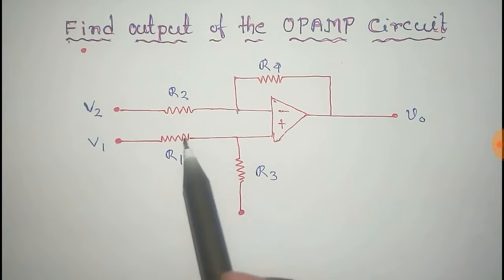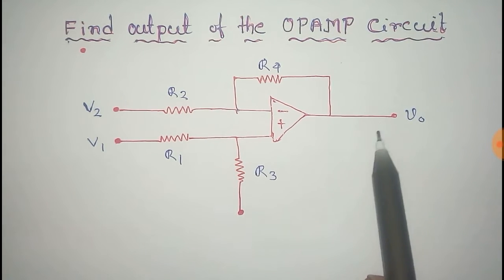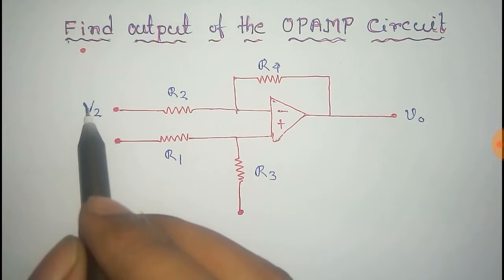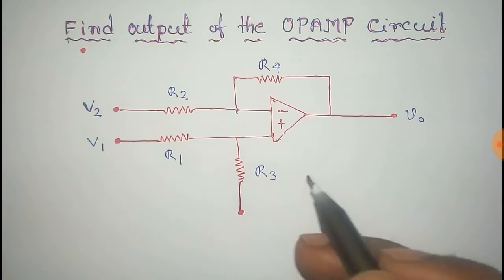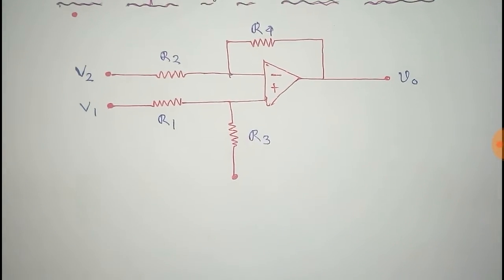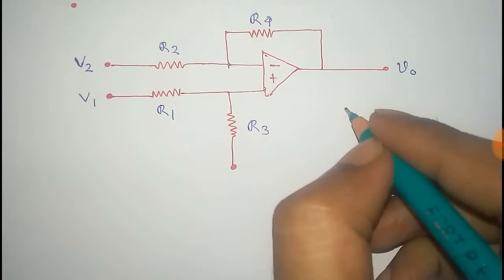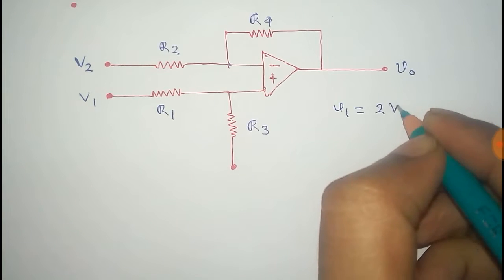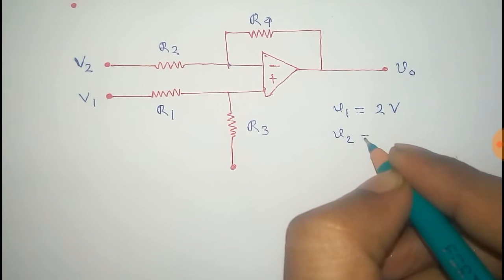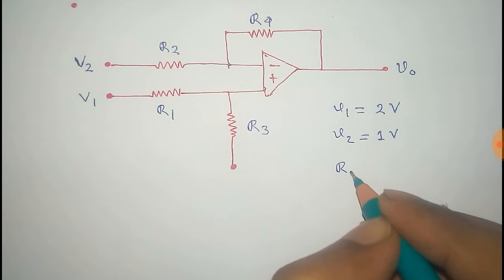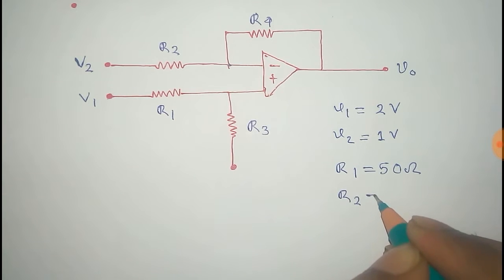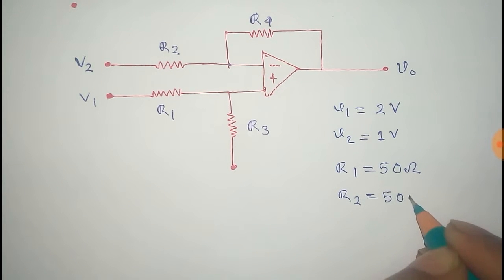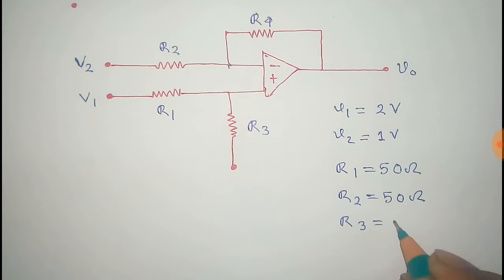In this video we will find the output of this op-amp circuit, V0. The inputs are V1 and V2 and the resistances are R1, R2, R3, and R4. This is the inverting and this is the non-inverting terminal. The given data are: V1 = 2V, V2 = 1V, R1 = 50 Ohm, R2 = 50 Ohm, R3 = 50 Ohm, and R4 = 100 Ohm.